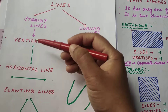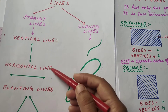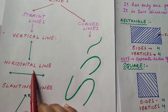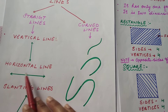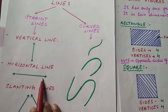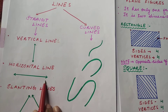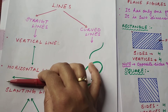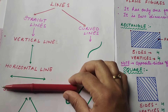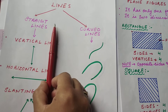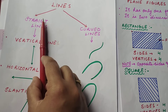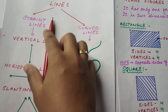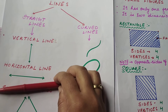When you draw a straight line from left to right, this is a horizontal line. I have placed this pen in a horizontal way and this pen in a vertical way. This is vertical and this is horizontal.